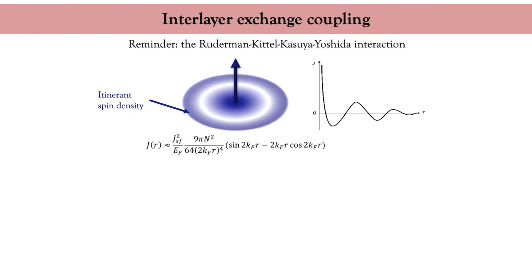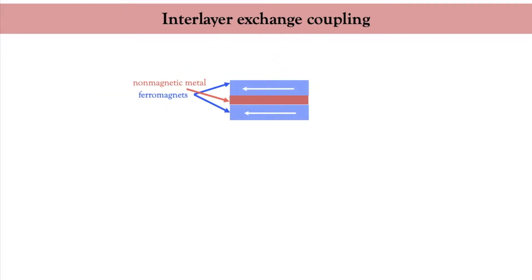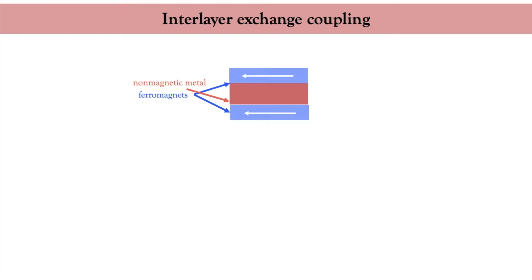If another magnetic impurity is brought close to the first, you obtain either ferro- or antiferromagnetic coupling depending on the distance separating the two impurities. Returning to two ferromagnetic layers separated by a non-magnetic metal: if the non-magnetic metal layer is thin, the two ferromagnets tend to align with each other. However, as the thickness of the non-magnetic metal increases, one can obtain antiferromagnetic coupling, and then upon further increasing the thickness, ferromagnetic coupling again — in a manner very similar to the RKKY coupling.